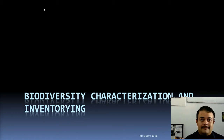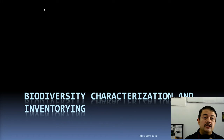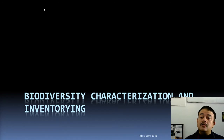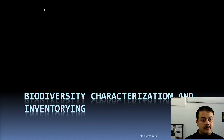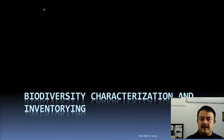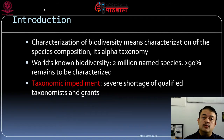Biodiversity characterization is a window to the unknown — you have no clue whether it is a new species or an old species. You might be describing a species entirely new to science. All those things are part of characterization. Inventorying, on the other hand, is usually about known species — making a list, for example a checklist of mosses from the Himalayas. The Botanical Survey of India (BSI) and Zoological Survey of India (ZSI) produce many such checklists on animals and insect species from various parts of India.